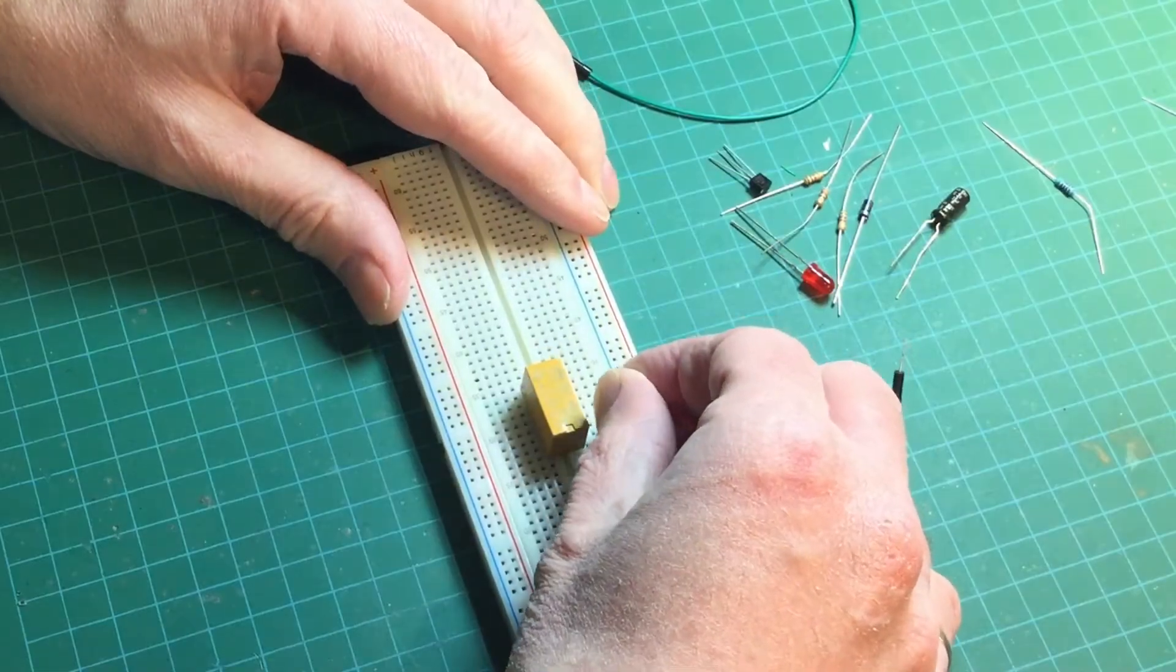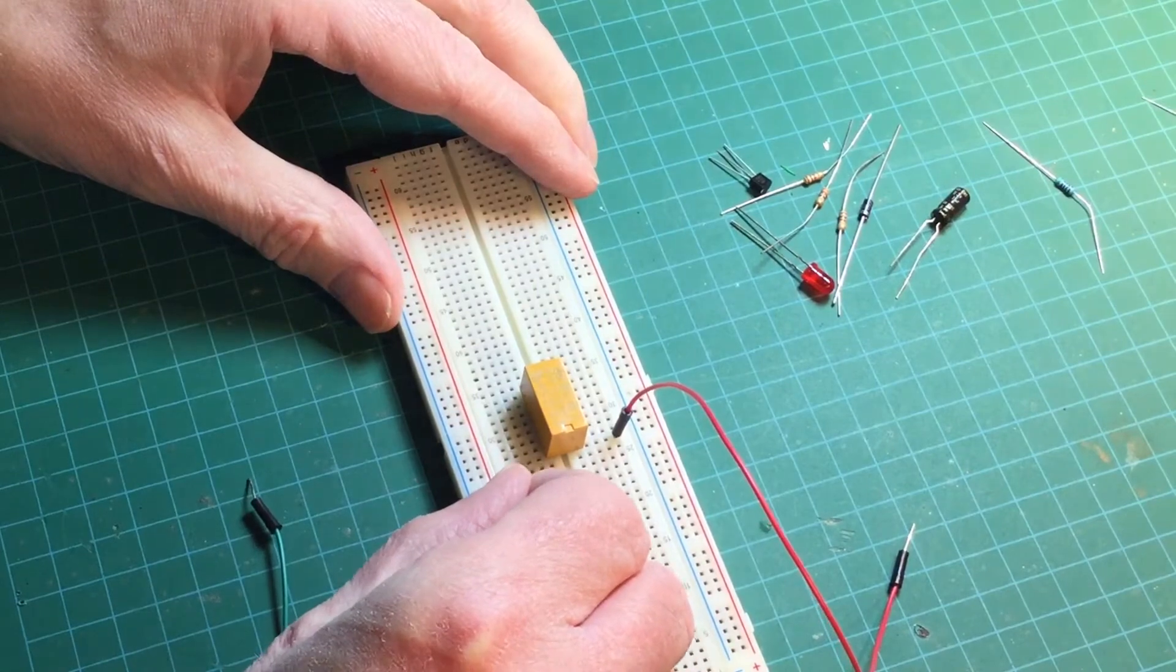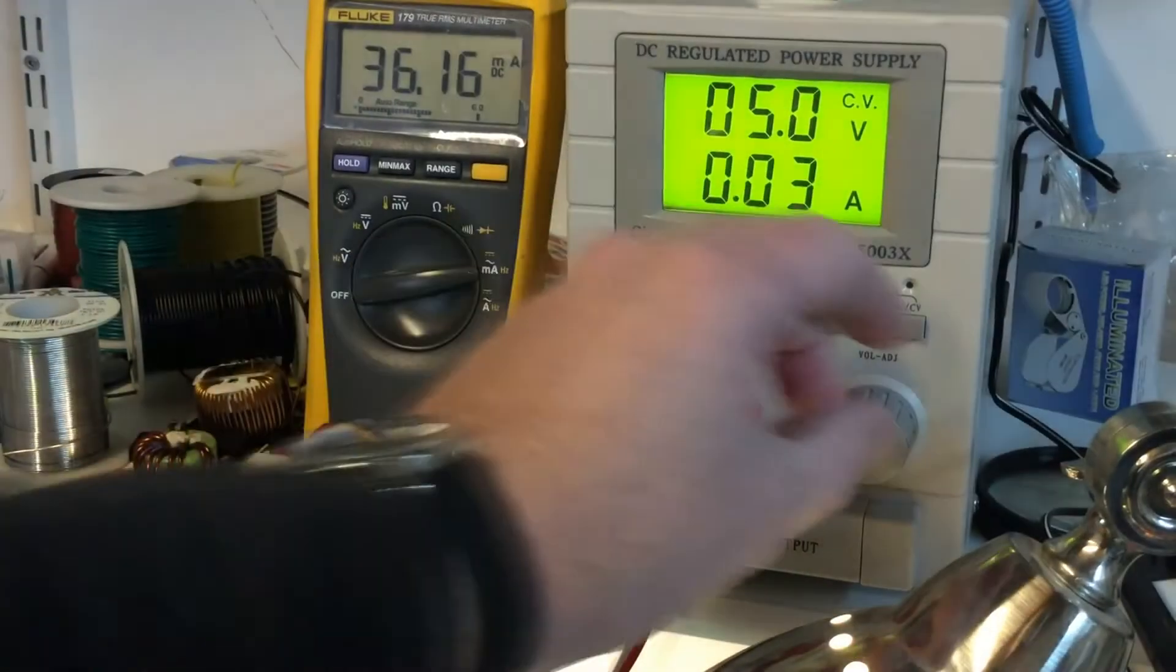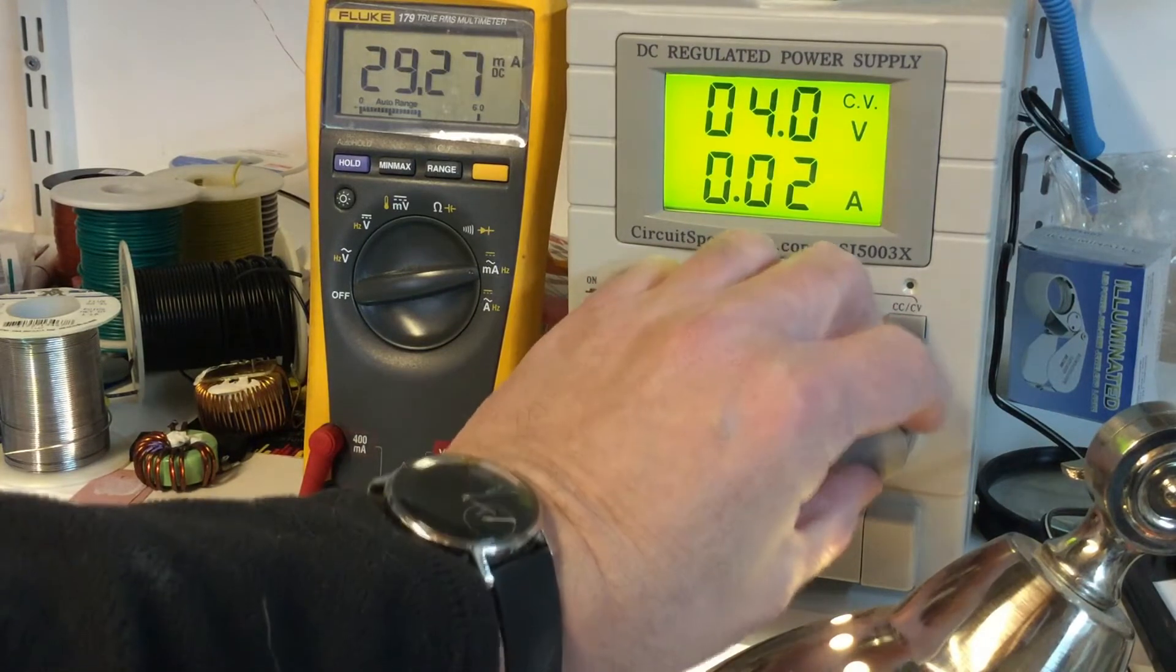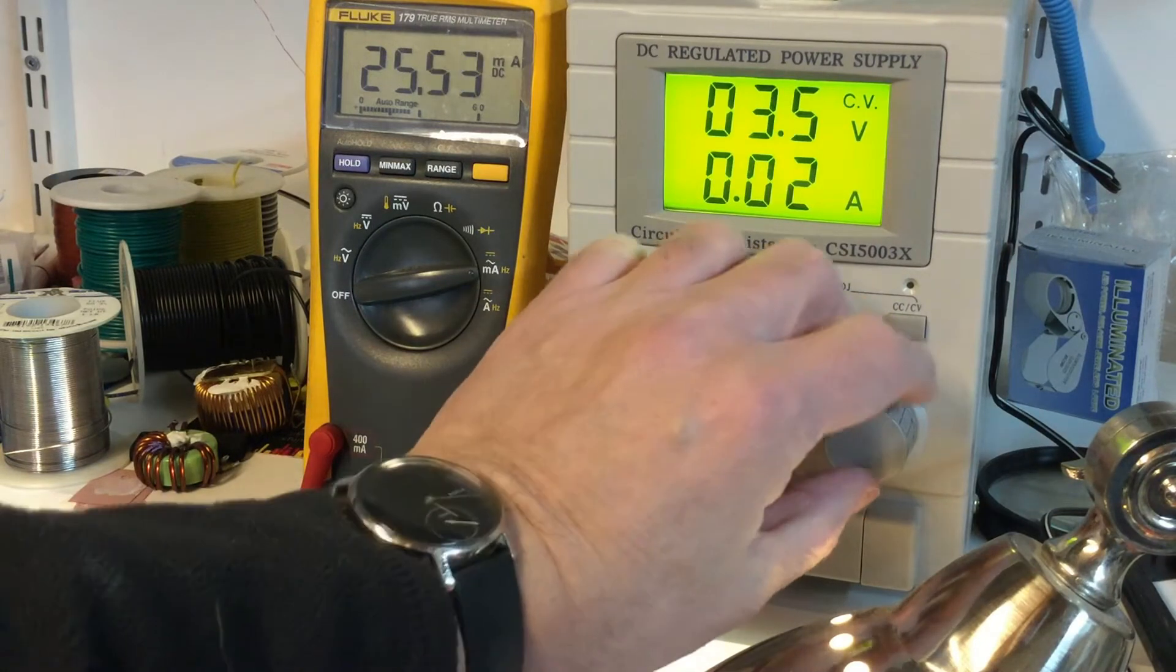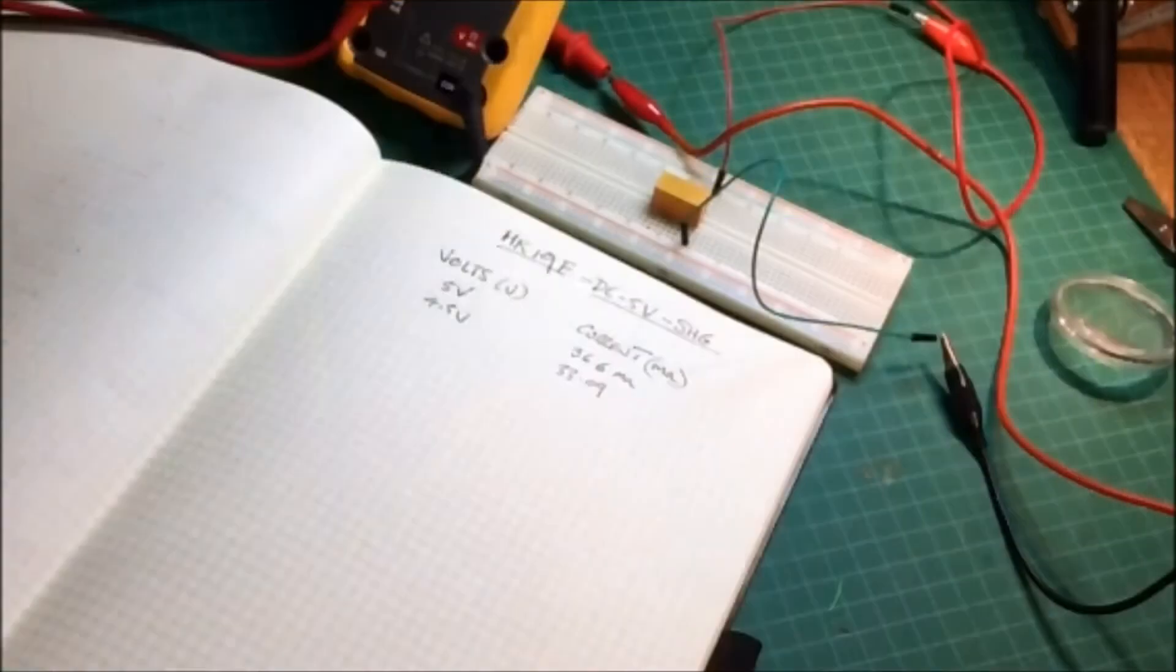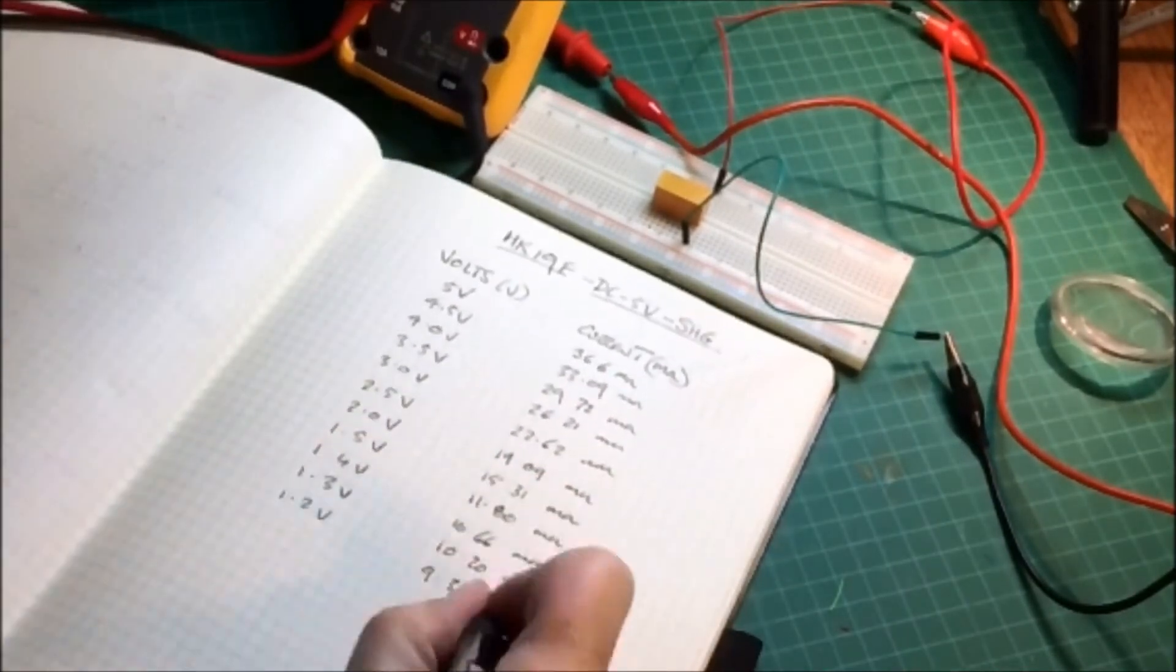I decided to start by characterizing the relay. So I wanted to find out its response to different voltages and currents, and I wanted to find out if the impedance was always the same at different voltages. So I did this by connecting a power supply directly to the relay with a current meter in series and adjusting the voltage down from 5 volts every half volt and recording the voltage and current. And when I got close to the dropout point, by every 0.1 volt. And then I wrote down the results.